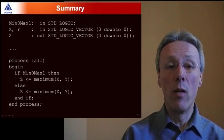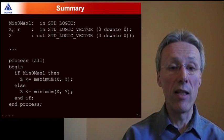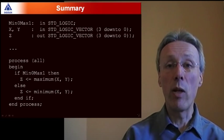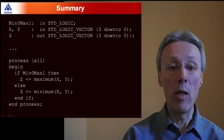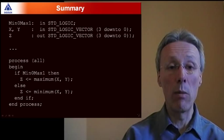So summary so far. We can write process all in order to build an implicit combinational sensitivity list. We don't have to explicitly test equals zero and equals one when we're testing standard logic values, and there's a couple of new built-in functions, maximum and minimum.